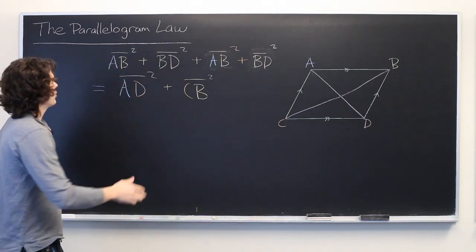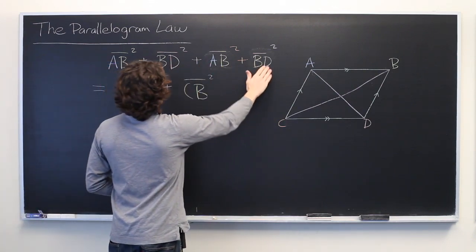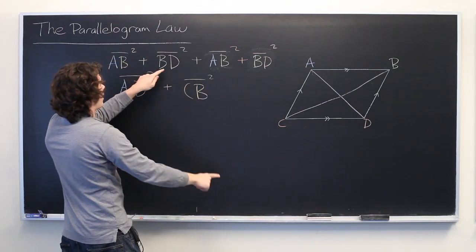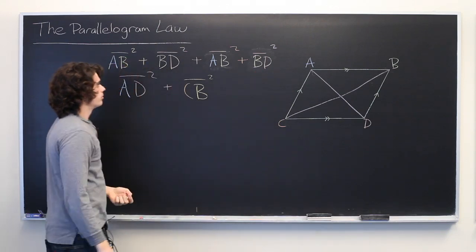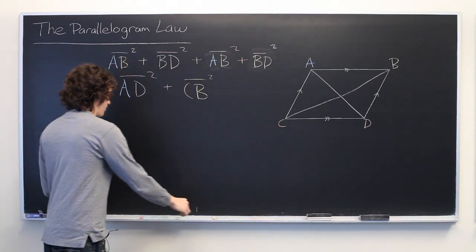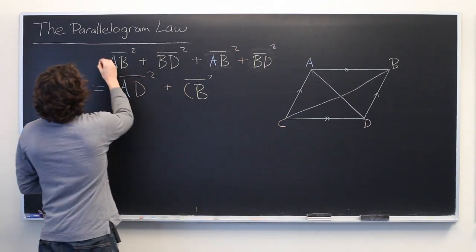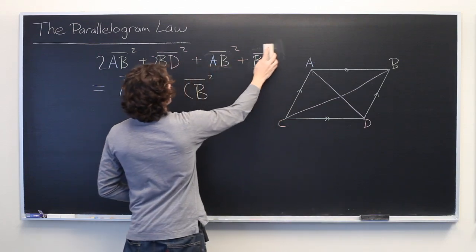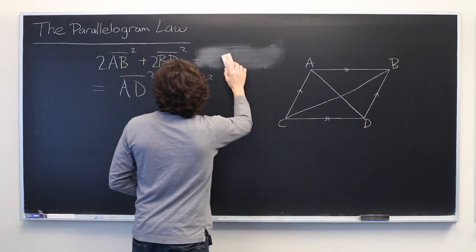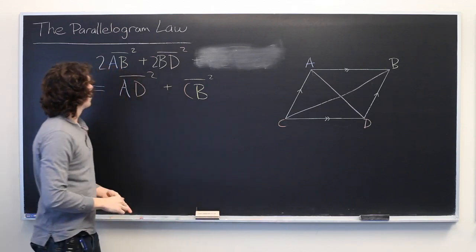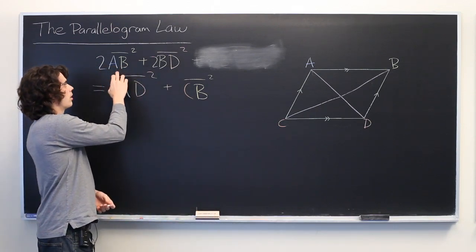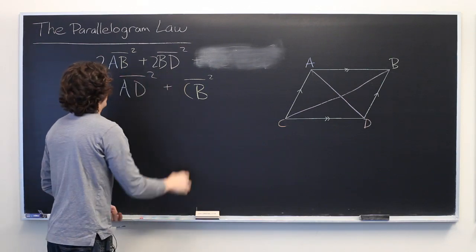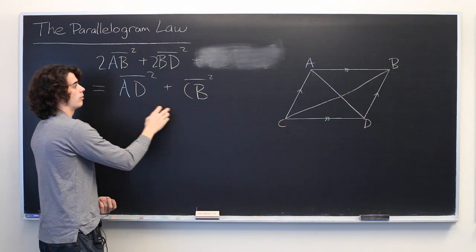Okay, but then we can simplify this top part of the equation quite nicely. We have an AB squared term and an AB squared term, and we have a BD squared term and a BD squared term. So, what we can simply do is just put the coefficient in front of these two and erase these terms altogether. So what we're left with is 2 times AB squared plus 2 times BD squared equals AD squared plus CB squared.